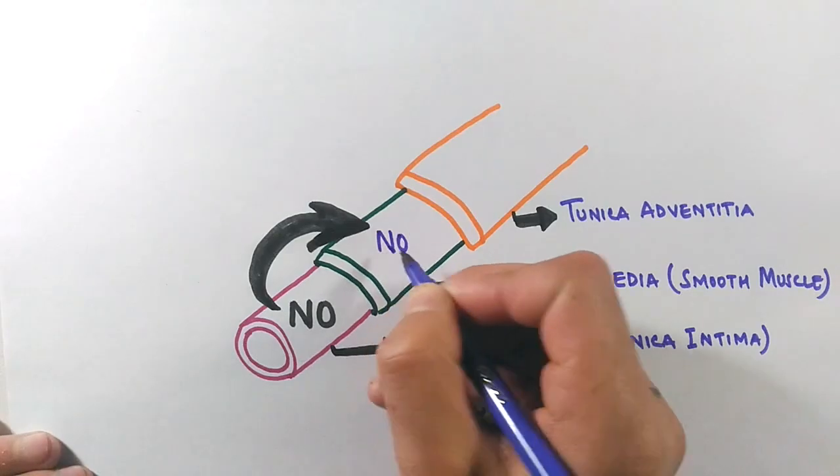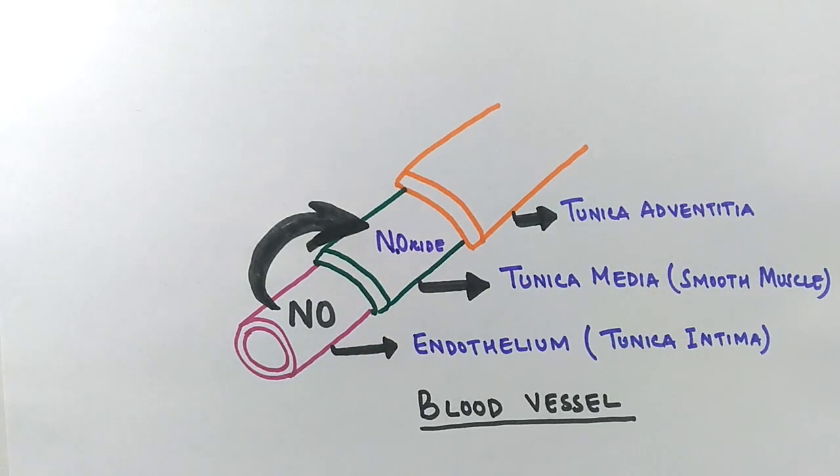This nitric oxide made in the endothelium layer gets into the tunica media, the smooth muscle layer, by simple diffusion, and here it relaxes the muscles.